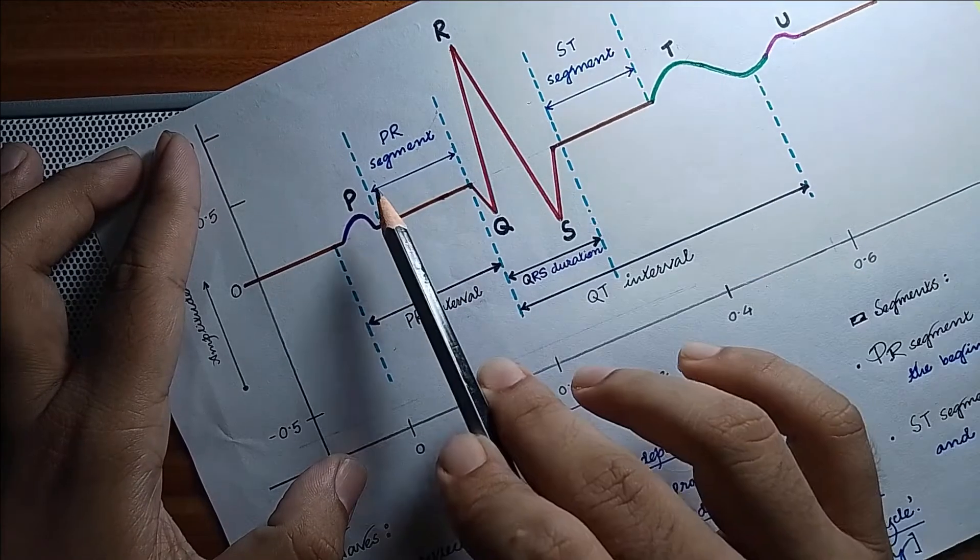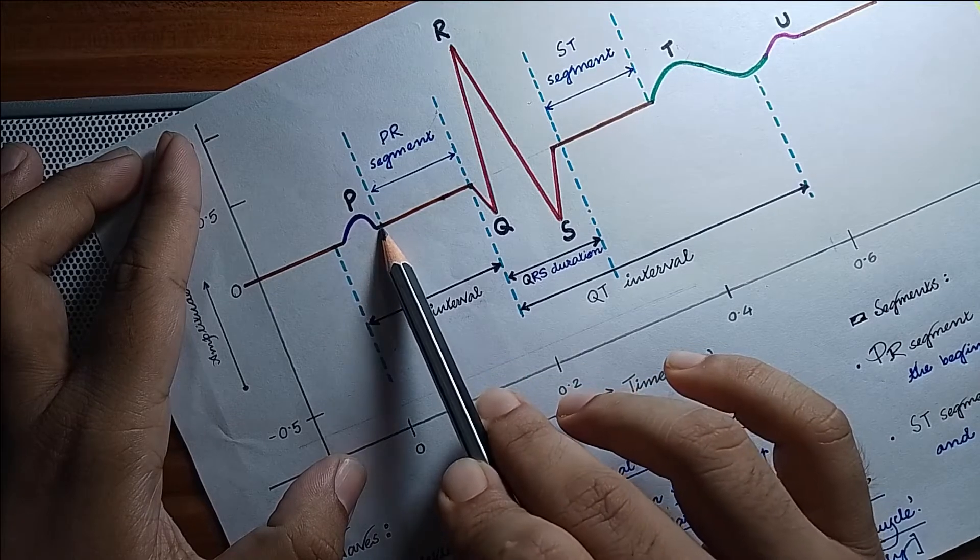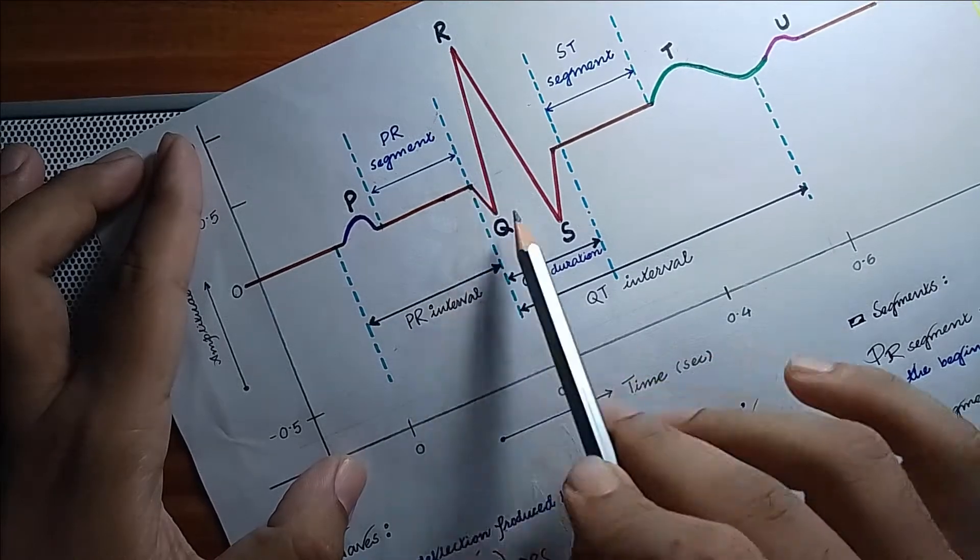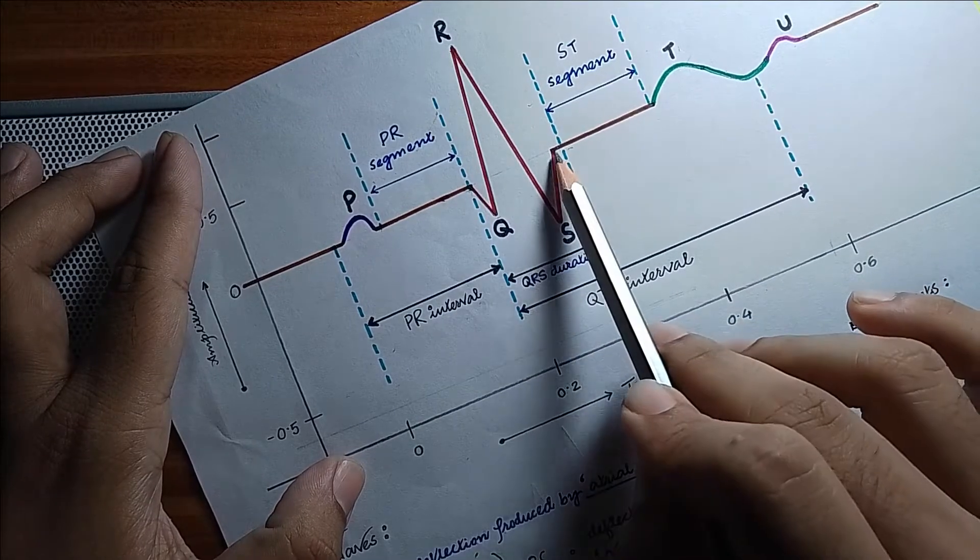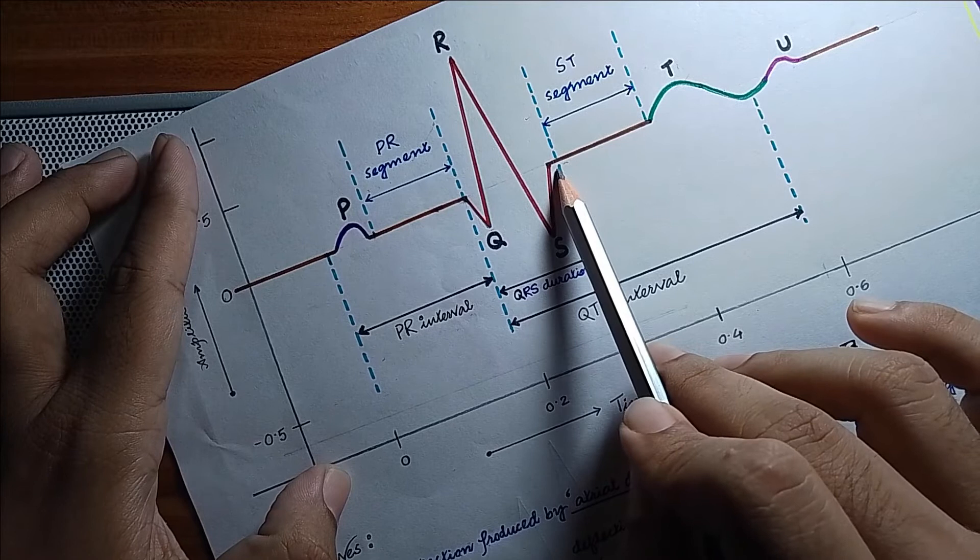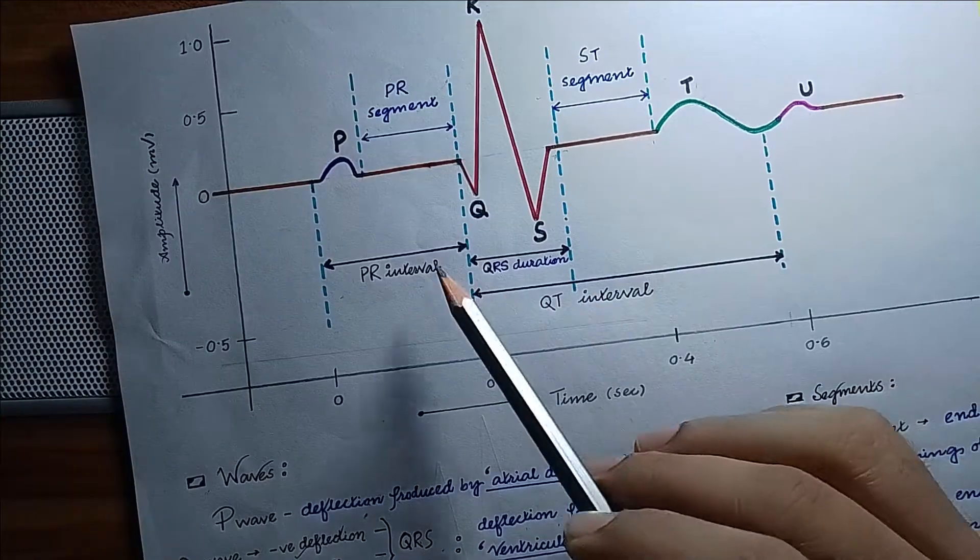The PR segment starts from the end of P wave and the beginning of QRS complex. The ST segment starts with the end of QRS complex and beginning of P wave. Now let's see the intervals.